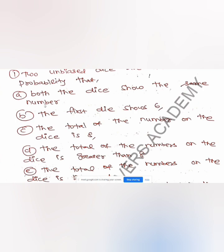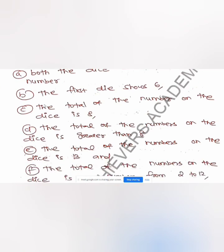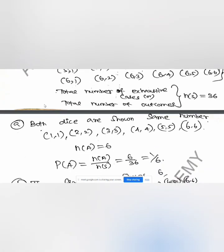So, what numbers are the same? We have (1,1), (2,2), (3,3), (4,4), (5,5), (6,6). How many possibilities are there where both dice show the same number? Totally 6 possibilities. So the probability is 6 by 36, which simplifies to 1 by 6.